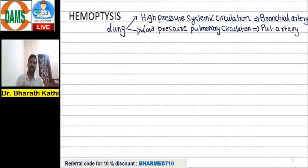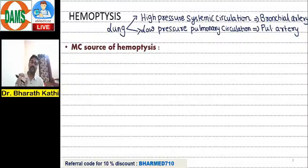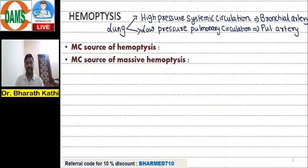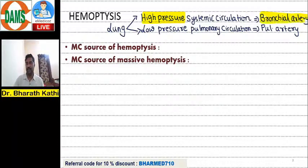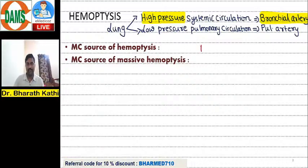In a normal individual, the lung gets dual blood supply: one is high-pressure systemic circulation and the other is low-pressure pulmonary circulation. The most common source of hemoptysis — because of the high-pressure nature of circulation — is the bronchial artery.